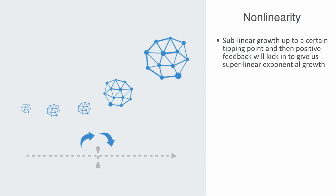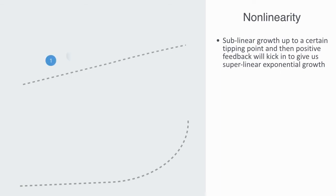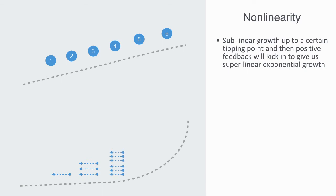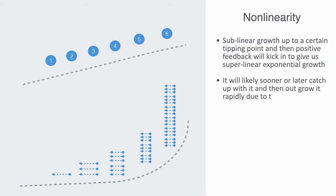An important thing to recognize in the growth of a network is the fact that whereas the number of nodes in the network may grow in a linear fashion — as in 1, 2, 3, etc. — the number of edges can grow in a super-linear fashion. With 1 node we can have 0 links, with 2 nodes we can have 1 link, with 3 we can have 3 links, with 4 nodes we can have 6 links, with 5 we can have 10, and with 6 nodes we can have 15 possible links. So whereas the number of edges started off lower than the number of nodes, it will likely sooner or later catch up with it and then outgrow it rapidly.